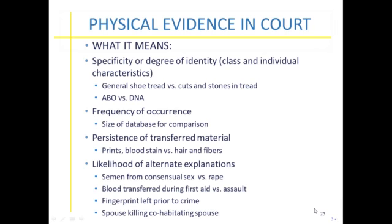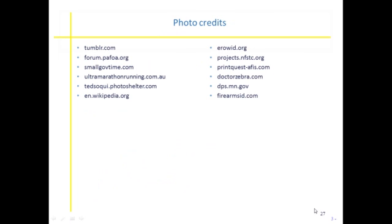The forensic scientist must also address the likelihood of alternate explanations. For instance, in a potential rape case, the presence of semen doesn't necessarily show it was rape — it could have been consensual sex. Blood can be transferred while giving first aid versus during an assault. Fingerprints may have been left at a scene prior to the crime occurring. They need to relate this context so the jury can understand what the evidence actually means. Ultimately, physical evidence offers certainty, and through that certainty the jury is relayed good evidence to make decisions.